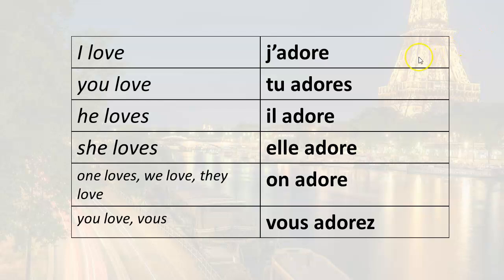We have: I love, or I adore — j'adore. You love — tu adore. He loves — il adore. She loves — elle adore. One loves — on adore. You love — vous adorez.